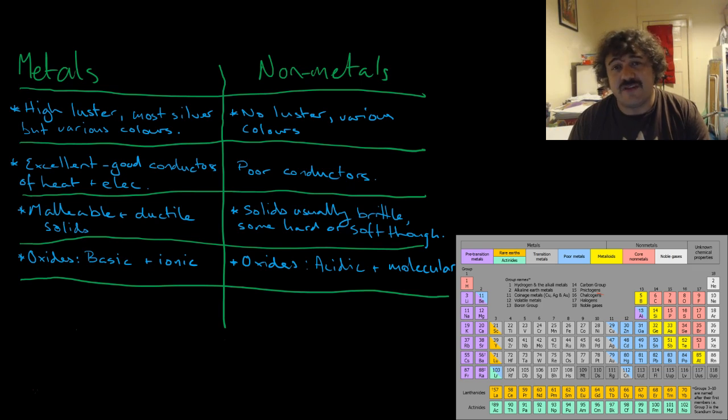Oxides. This is interesting. If you've got an oxide of a metal, and you put it with water, it will make a basic solution, and it is ionic. If you have an oxide of these guys, over here, your non-metals, they are acidic, and they are molecular. They're covalent.